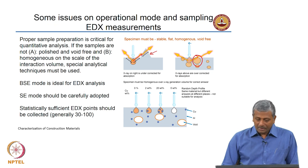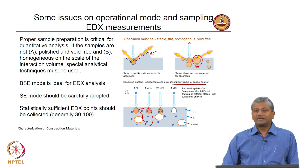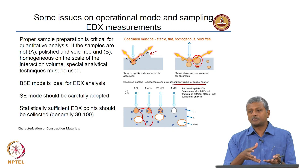The specimen should be homogeneous over the X-ray generation volume for a correct answer. For example, if you have a lot of heterogeneities present in the sample at the point you are trying to analyse, you will get a mixed response and will not really get the best answer.